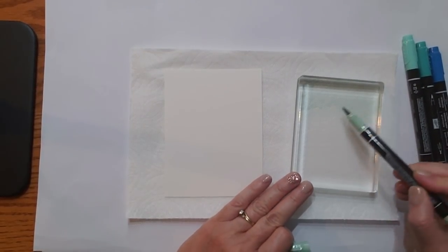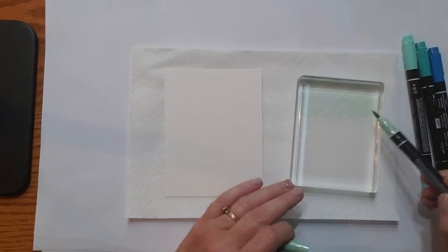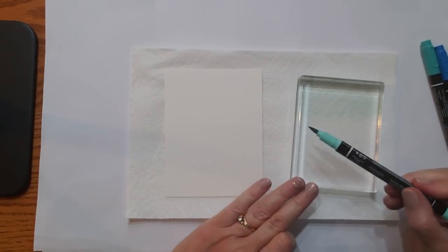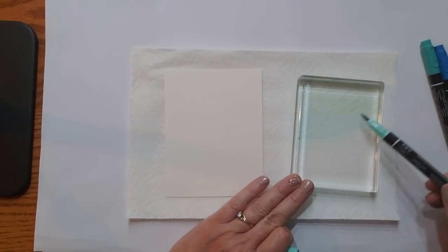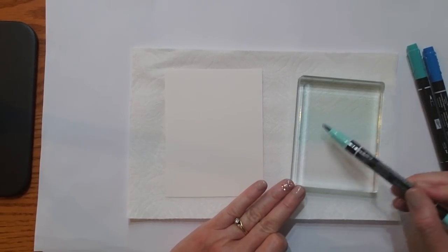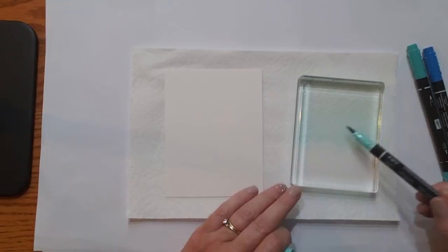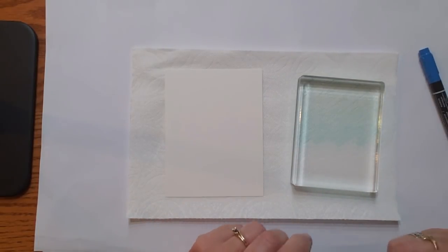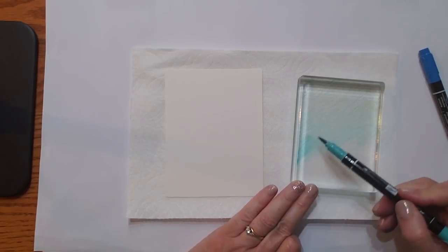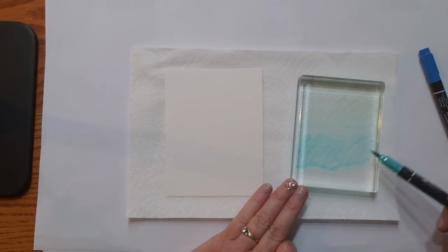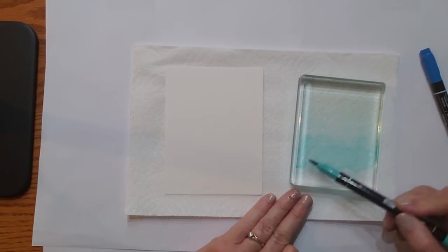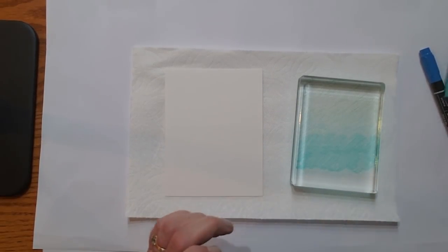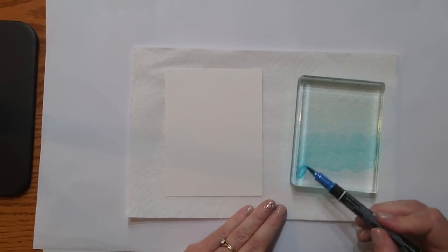So I'm just going to color some water onto this block. That was the Mint Macaron. This one is Coastal Cabana. I just picked some colors that go well and blend pretty well together. And then I went from kind of light to dark. This is Bermuda Bay. And I found if I do a circular motion I get a little more ink on the block, which is really what I want. And then last is Pacific Point.